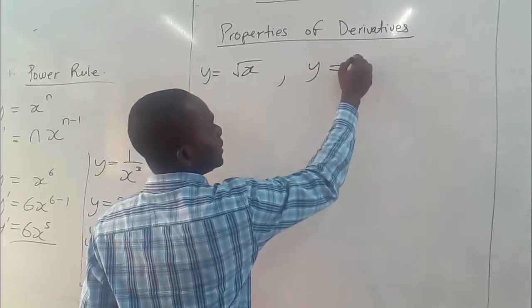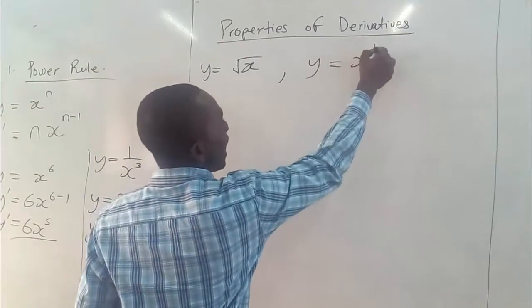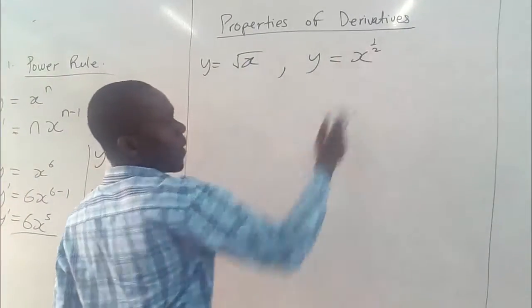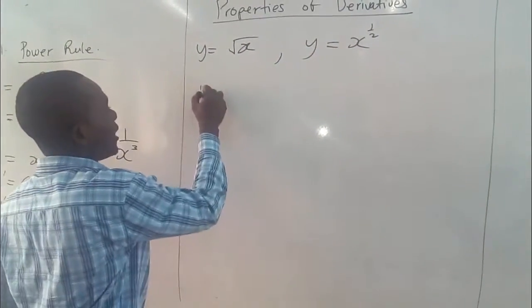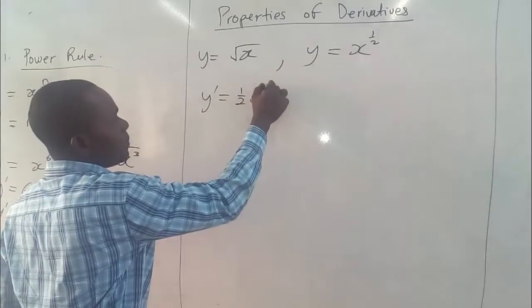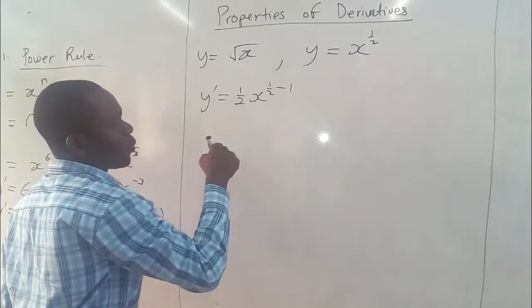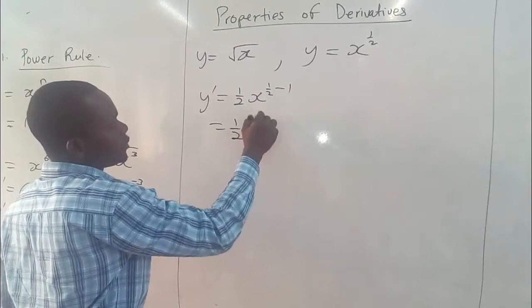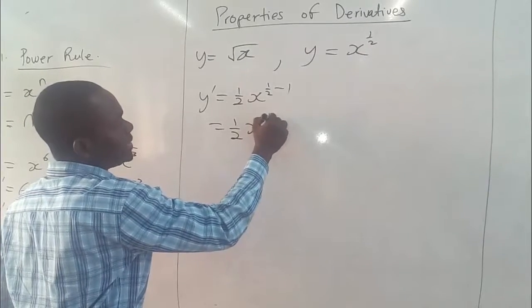So we have y equals x to the power half. We know that square root can be written as the power of half. So that we can now have our derivative to be equal to half times x to the power half minus 1, which gives us half x to the power negative half.